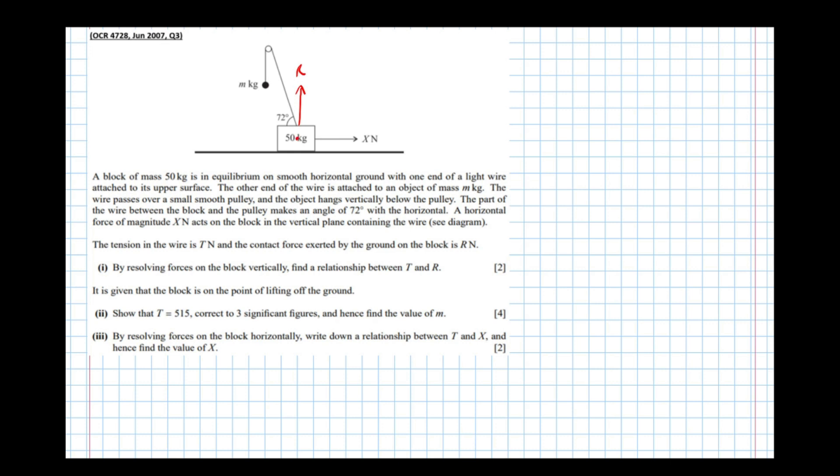We also know the particle has a weight of 50g, 50 times 9.8, and the tension in the wire is t. So from the block's point of view, the tension's pulling it upwards. From the particle's point of view, the tension's pulling it upwards again. So we've now got all the forces on the diagram.